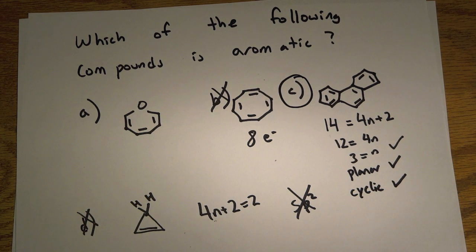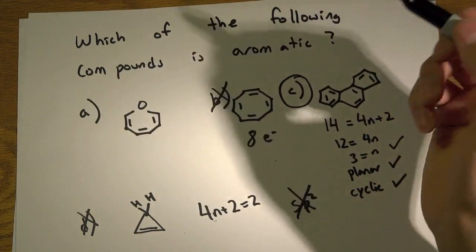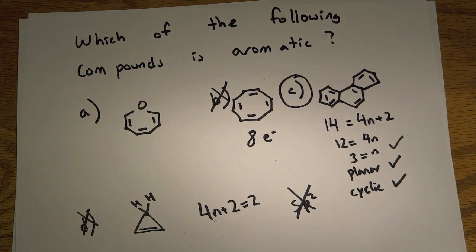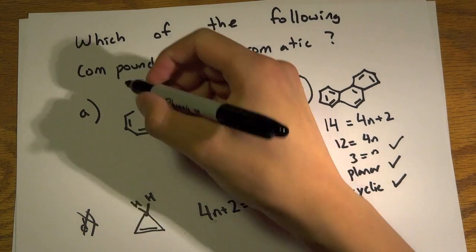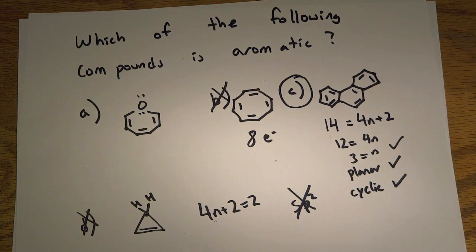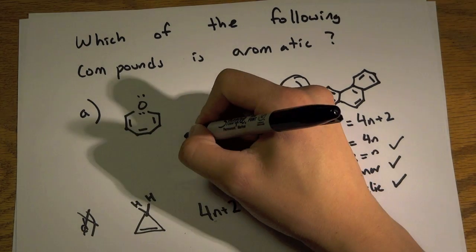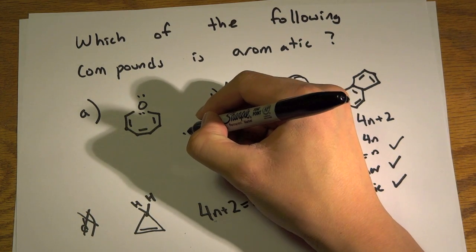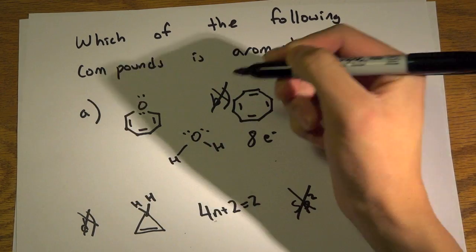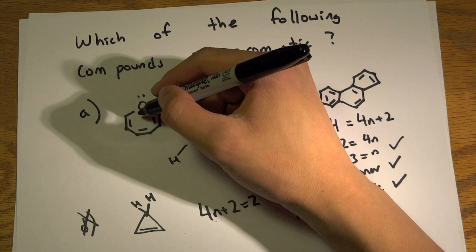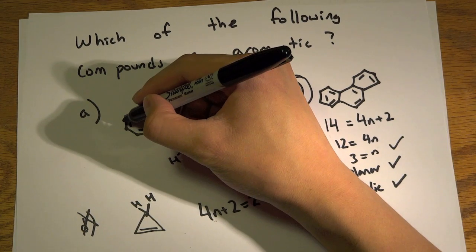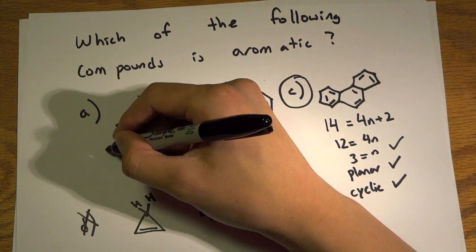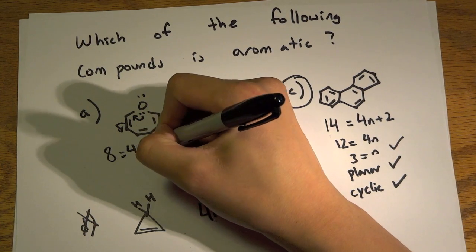So this one checks out — it's aromatic, and that's our answer. I skipped option A for a good reason, so let's look at that one. Is it cyclic? Yes, it's in a circle. Is it planar? Well, if we look here, there are two lone pairs on the oxygen. That should be an indication it's not planar — anytime we have two lone pairs like that with an oxygen, think of water: it's going to be bent, so it's not planar. Also, those lone pairs contribute to the pi electron count, giving us 8 pi electrons instead of just 6. So 8 equals 4n plus 2 doesn't work either.